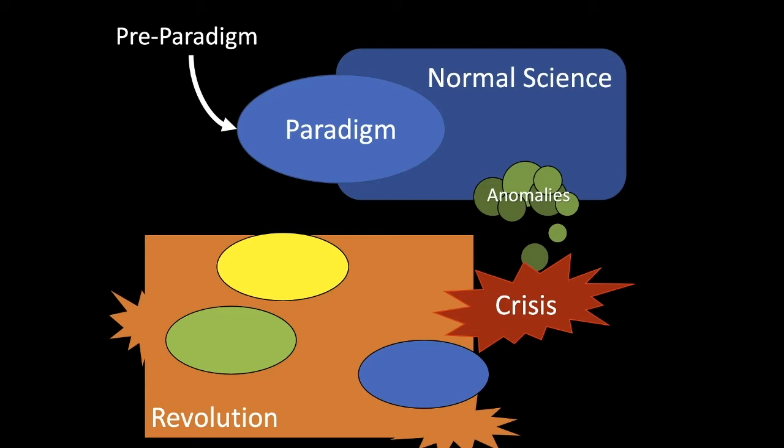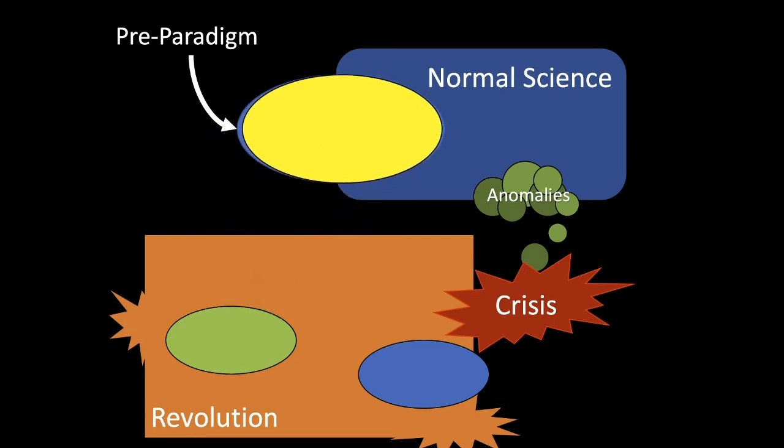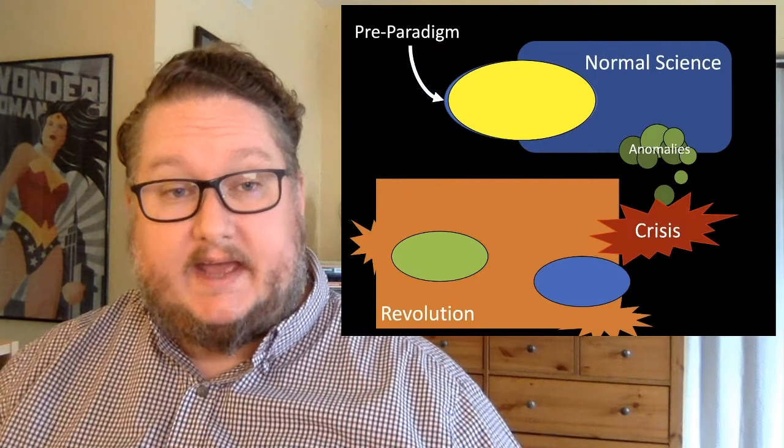And as the revolution proceeds, one paradigm will typically get more adherents, it will become sort of better articulated than the others, it will have more success, and it will grow and eventually replace the old paradigm and kick off a new period of normal science. And so it's a fully kind of cyclical account of the dynamics of science.